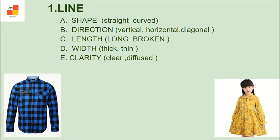Line has five aspects. First, the shape of the line — straight or curved. Straight lines give the impression of dignity and formality. They are formed by fabric weaves and prints. Curved lines can add fullness to the body. They are found in necklines, collars, sleeves, and skirts.